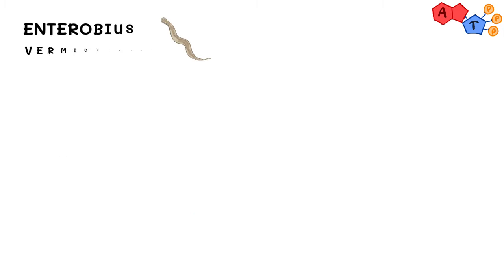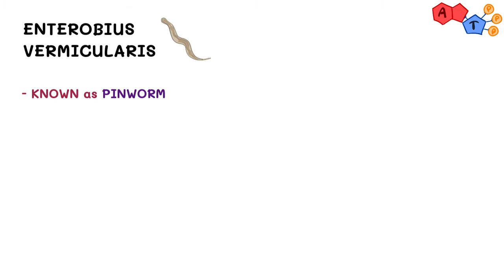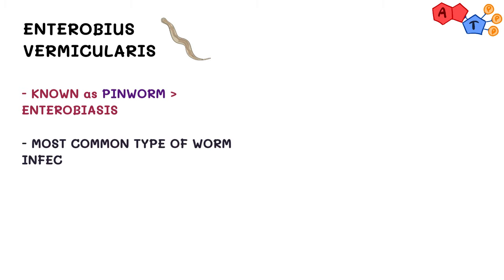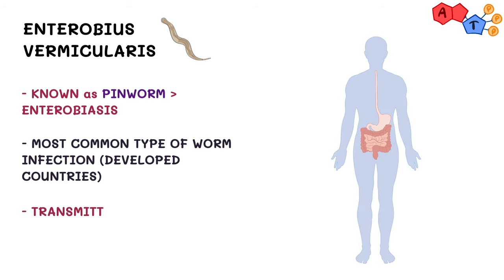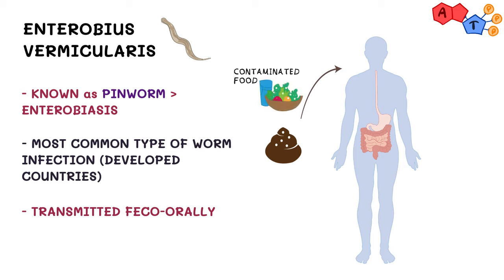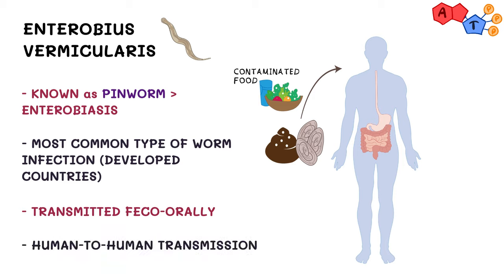The first nematode on the list is Enterobius vermicularis, also known as pinworm, which can lead to enterobiasis. In developed countries, Enterobius vermicularis is the most common type of worm infection. It is transmitted fecal-orally, when humans ingest contaminated food or hands reach the mouth carrying pinworm eggs — so it is a human-to-human transmission.